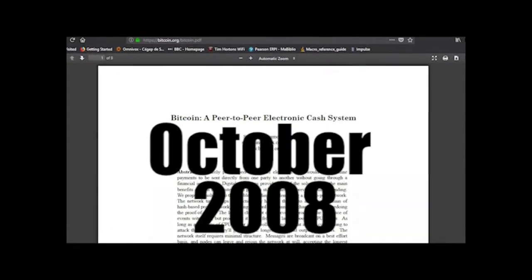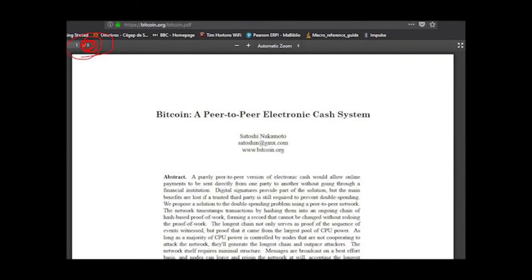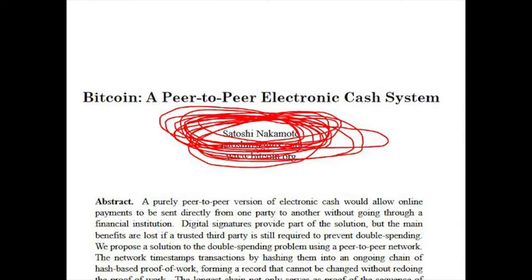During October of 2008, an internet cryptographer published a short white paper describing how cryptocurrencies would work. He was hidden behind the name Satoshi Nakamoto.